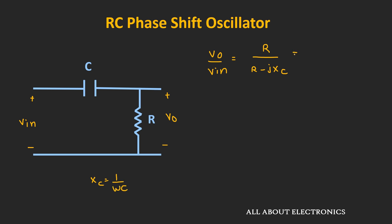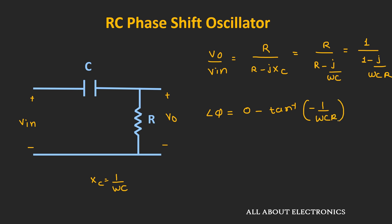We can write the transfer function as 1 divided by (1 minus j divided by ωCR). If we find the phase shift φ, it is given as tan inverse of minus(−1/ωCR), which equals tan inverse of (1/ωCR). Since 1/ω equals Xc, the phase shift φ equals tan inverse of Xc by R.